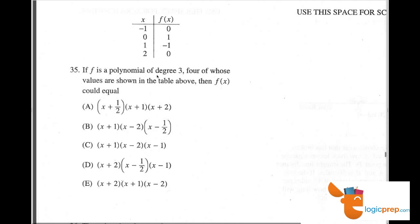Number 35. If f is a polynomial of degree 3, four of whose values are shown in the table above, then f of x could equal which one of these.